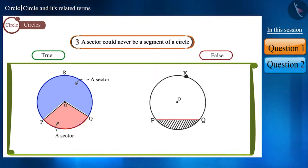And in any circle, the region between a chord and either of its arcs is called a segment of the circle.